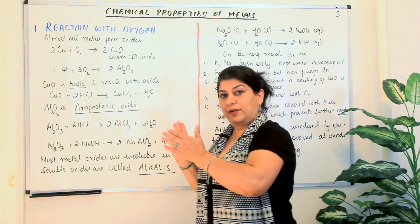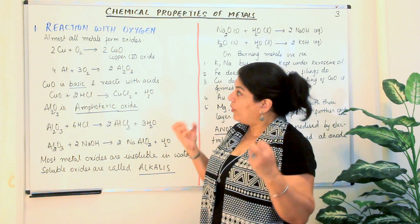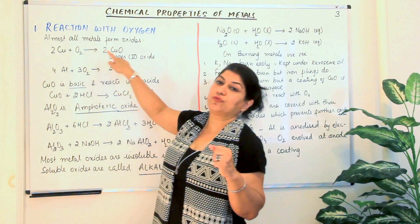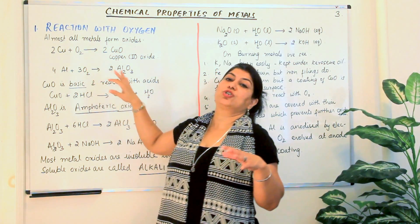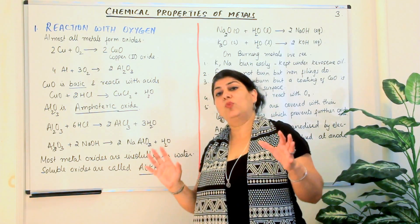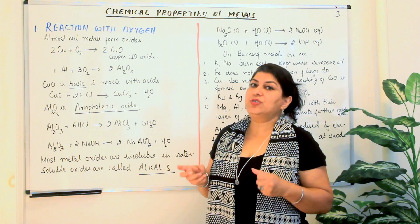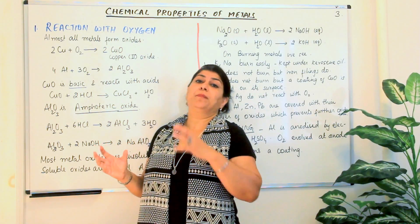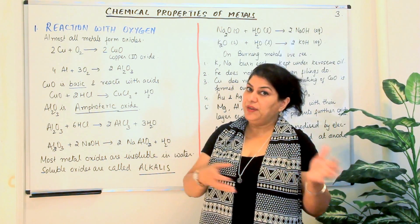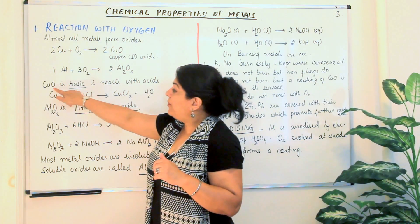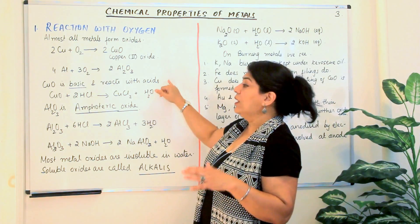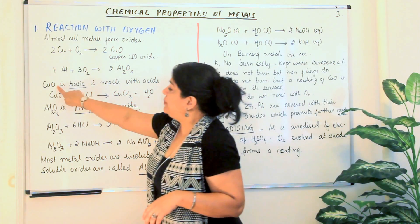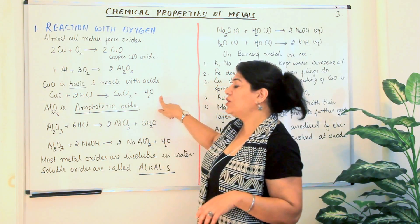The main point to memorize is that whenever metals react with oxygen, they result in the formation of their oxides. For example, copper combines with oxygen to form copper oxide, and aluminum combines with oxygen to form aluminum oxide. Most of these oxides are basic in nature. Metals form basic oxides and non-metals form acidic oxides. Copper oxide is a basic oxide — it reacts with acids to form salt and water.